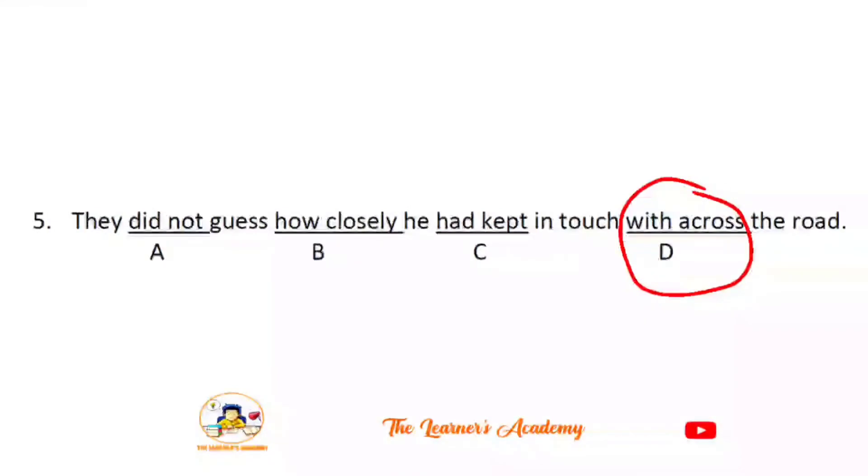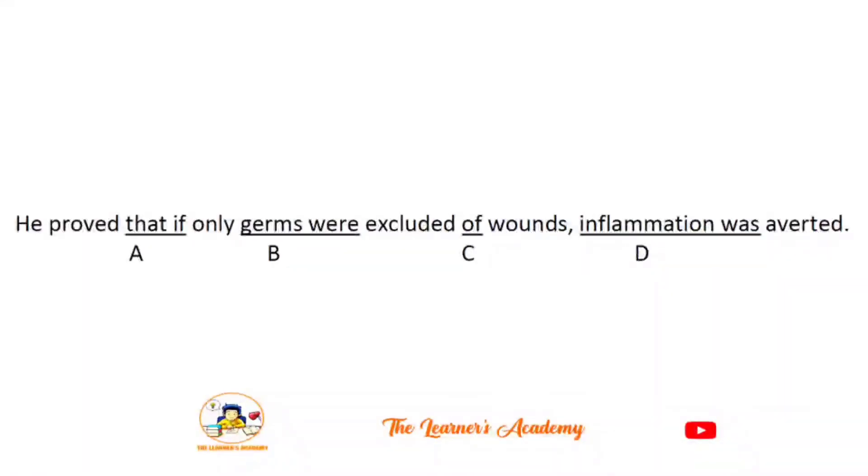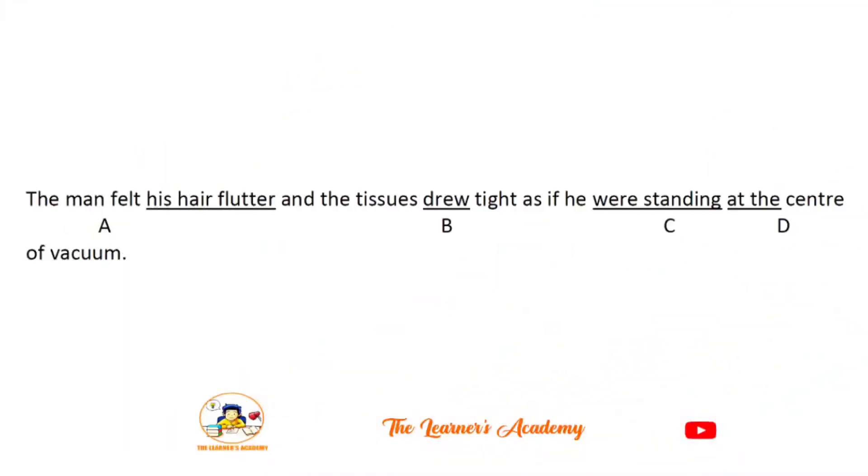He proved that if only germs were excluded of wounds inflammation was averted. In this sentence, option C has an error. It should be 'excluded from', not 'excluded of'. That's the correct preposition to use.